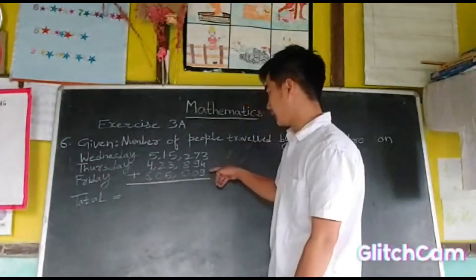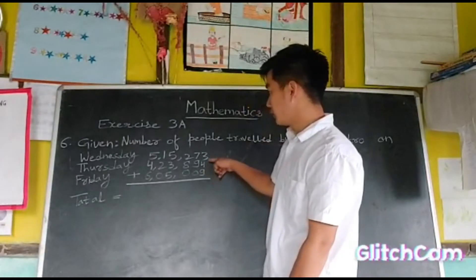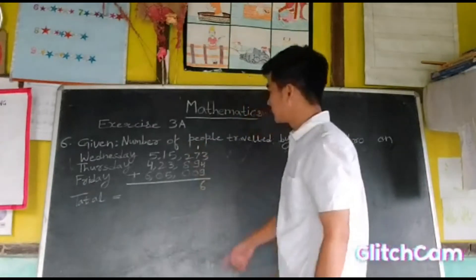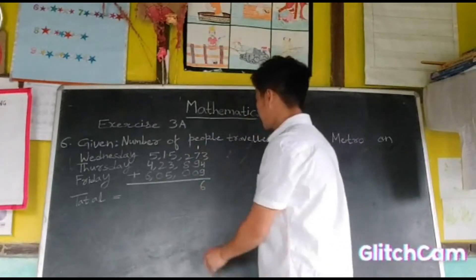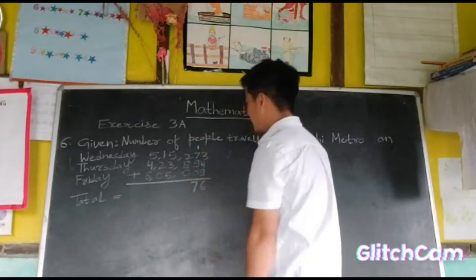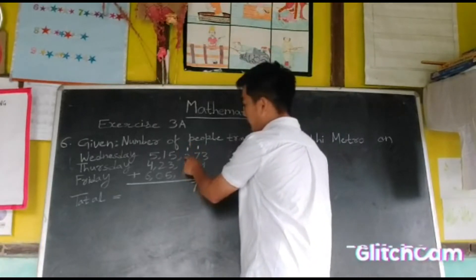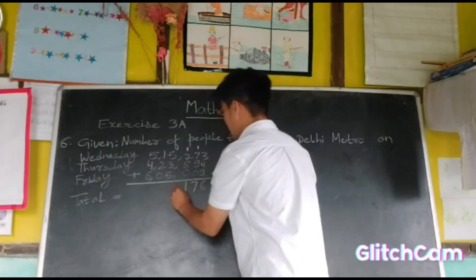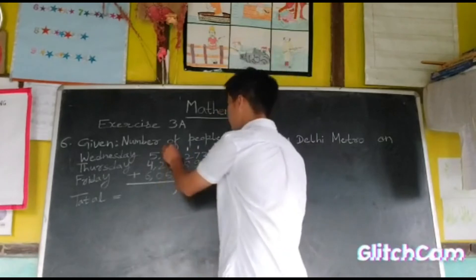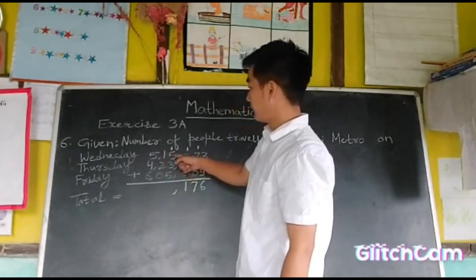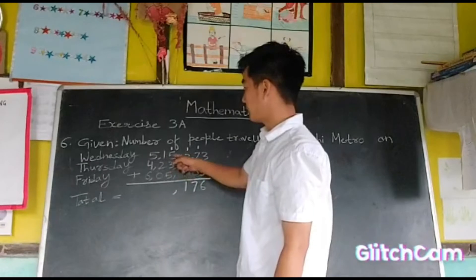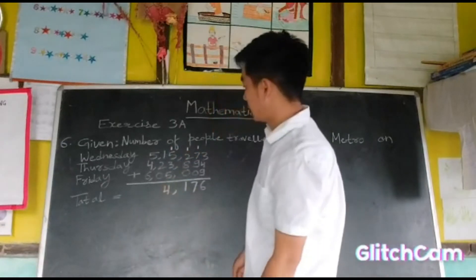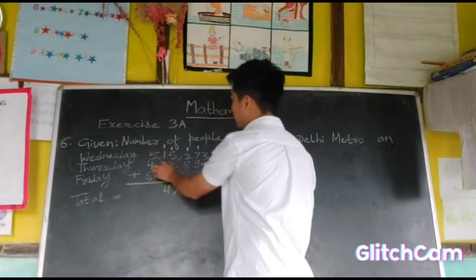Let us add these numbers. Nine plus four plus three is sixteen — write six, carry over one. Nine plus seven plus one is seventeen — write seven, carry over one. Eight plus two plus one is eleven — write one, carry over one. Five plus three plus five plus one is fourteen — write four, carry over one.